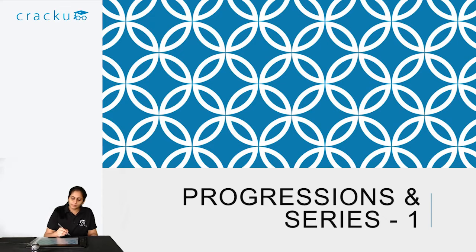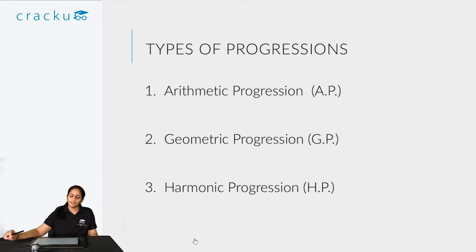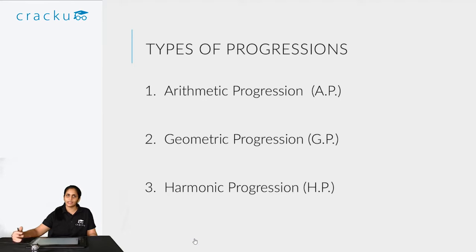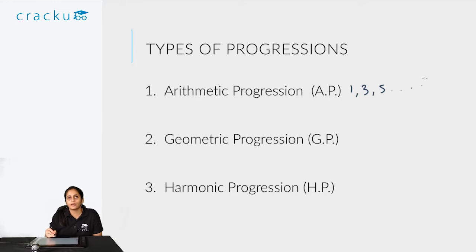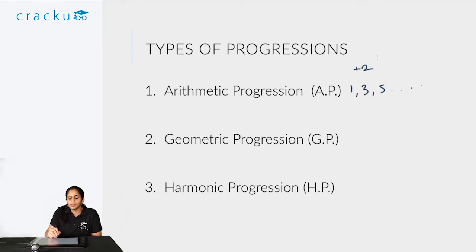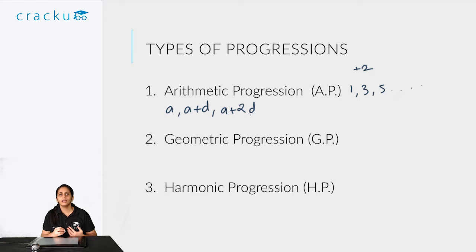Let's get started by first taking a look at the three basic progressions: AP, GP, and HP — that is, arithmetic progression, geometric progression, and harmonic progression. An arithmetic progression is a series of the form 1, 3, 5, etc., where the numbers have a constant common difference between them. In this series, all terms are 2 greater than the previous term. We can represent this series as A, A+D, A+2D, and so on.